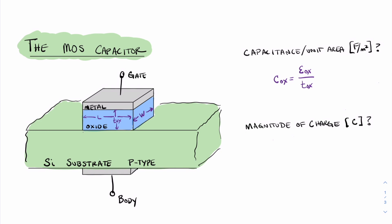Moving on to the magnitude of charge, here's where we start to see a few differences between the parallel plate capacitor and the MOS capacitor. The magnitude of charge Q is given as C ox times the width times the length — or the area — of the gate stack, times the voltage across the gate stack. But in this case, we're going to call this voltage the overvoltage, V sub OV, and you'll see why in just a few minutes.